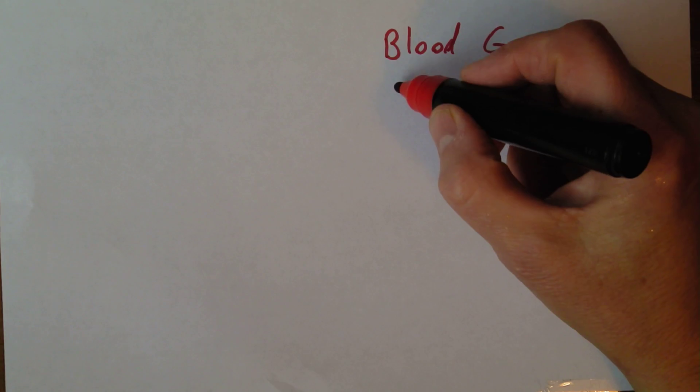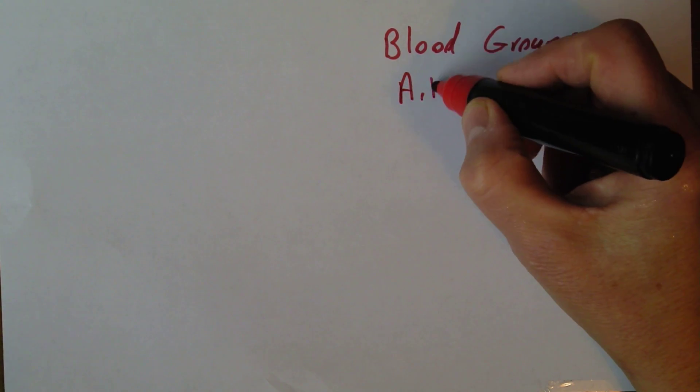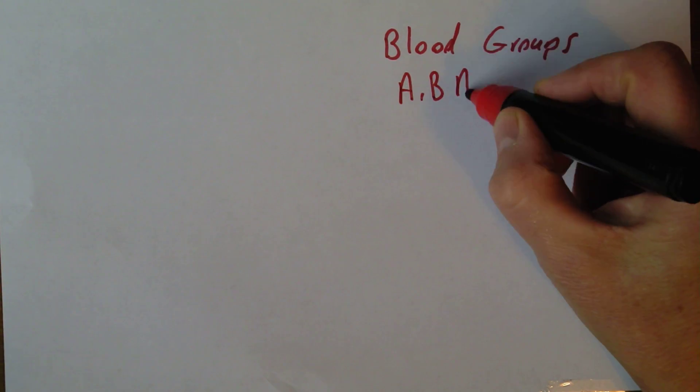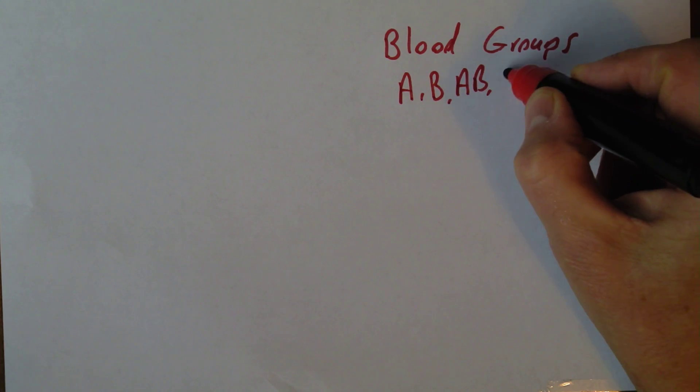When we're thinking about the blood groups, there can be groups A, B, AB, or O.